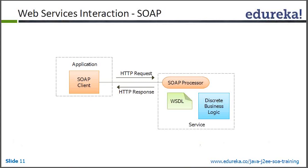There is a SOAP client and a SOAP processor with business logic and service. The SOAP client is an application looking for a web service. Communication between the client and server takes place using HTTP. Whatever request the client wants is converted into SOAP format — a specific format written in XML — and sent on an HTTP request to the service provider, which could be the same machine, same organization, or a different organization entirely.